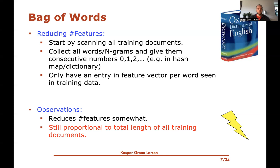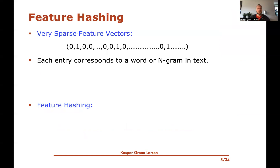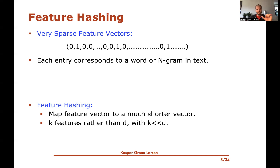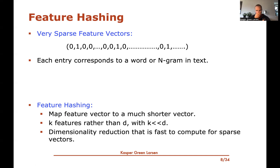Feature hashing is a way of taking very sparse feature vectors and quickly mapping them to shorter vectors. Whether the features come from a bag of words or TF-IDF representation, feature hashing maps from D features down to K features, with K much smaller than D. It is a form of dimensionality reduction, like random projections or PCA, but it is especially fast to compute for sparse input vectors.